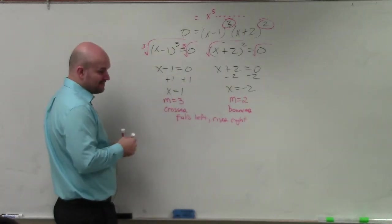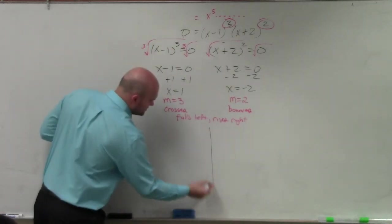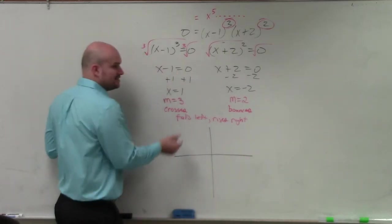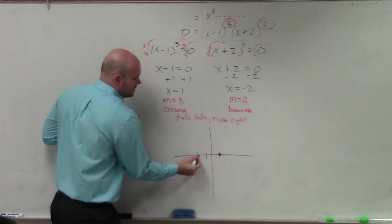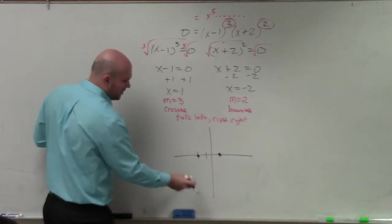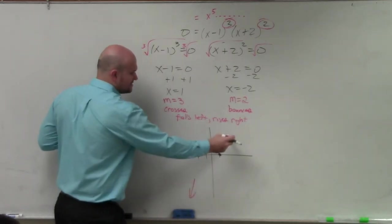So to graph this by hand with no aid of technology, where are my zeros? At 1 and at negative 2. What is my end behavior? Falls left, rises right.